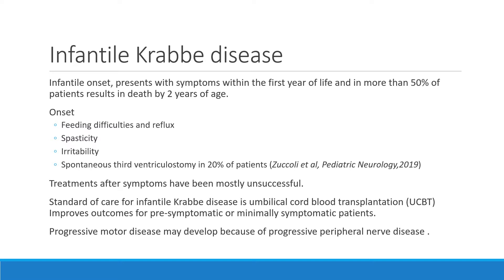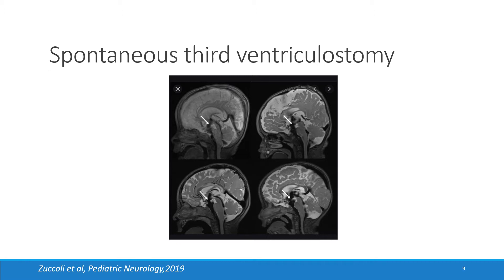Even after transplant, patients can develop some progressive motor or peripheral nerve disease. This is an example of spontaneous third ventriculostomy from a paper Dr. Zuccoli published in Pediatric Neuroradiology in 2019, showing the spontaneous opening of the floor of the third ventricle due to increased intracranial pressure.